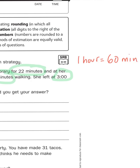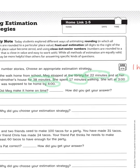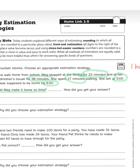So the question I'm asking myself is, is the amount of time that Meg spent at the library, at grandma's house, and walking more or less than 60 minutes?